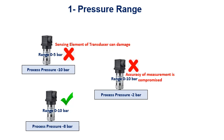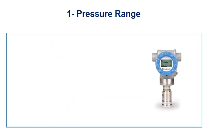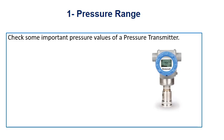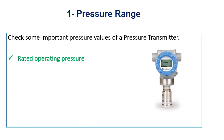It is a good idea to select a pressure transmitter whose range is about 120% of the maximum operating pressure. Don't forget to check some important values: rated operating pressure, safe operating pressure, and burst pressure. You can find these values from the product data sheet.